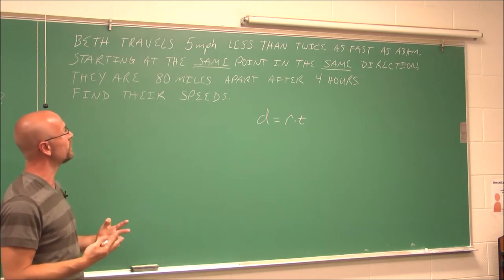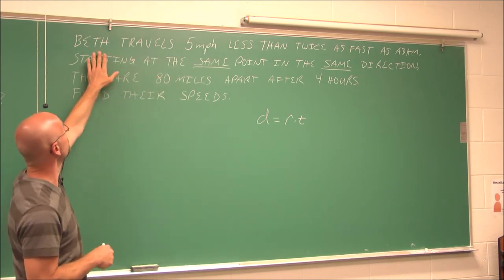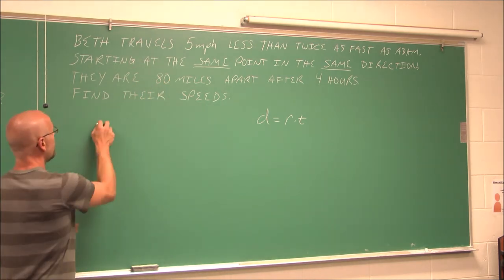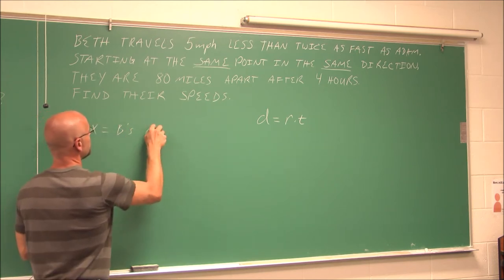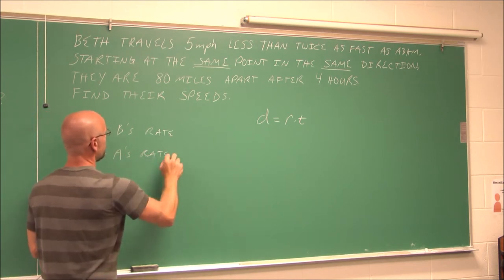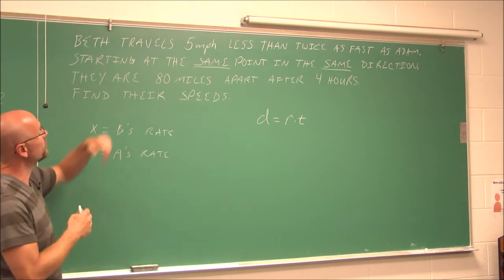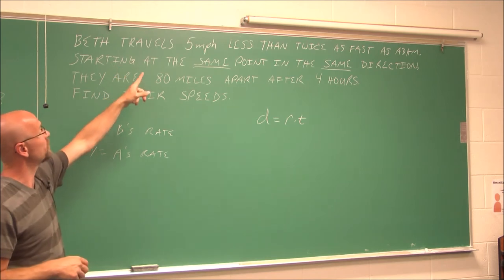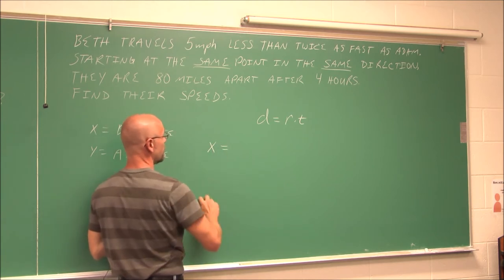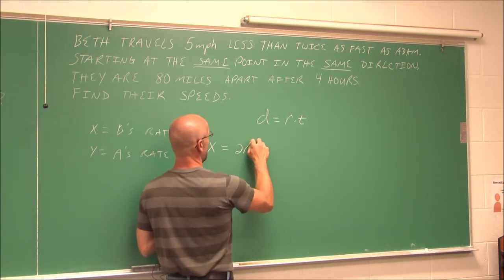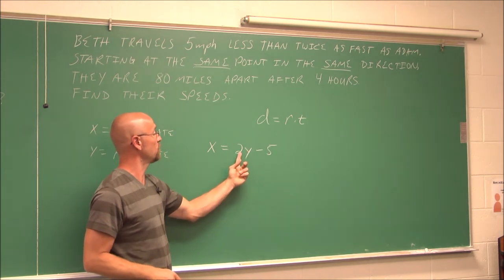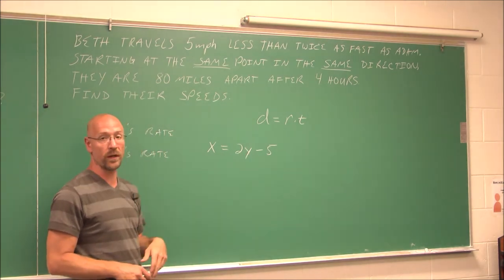So we have to assign a variable here. And if we read the first sentence, it says, Beth travels 5 miles per hour less than twice as fast as Adam. So I'm going to say, let x be Beth's rate, and let y be Adam's rate. And that first statement gives me a relationship. It says, Beth travels 5 miles per hour less than twice as fast as Adam. So Beth's speed is twice Adam's, or we're using y for Adam, less 5 miles an hour. So 5 miles an hour less than twice Adam's speed. So we have this equation, this relationship.